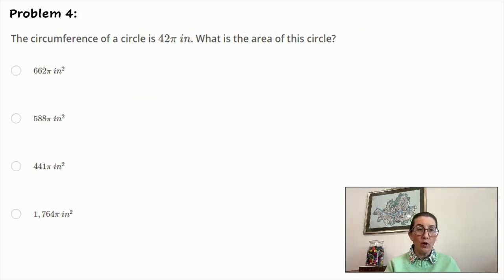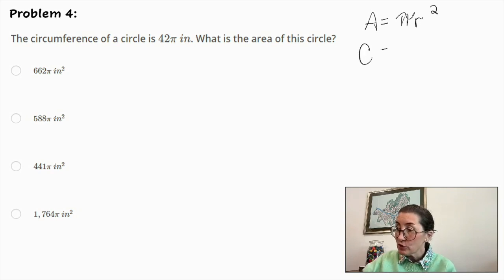Problem number four. The circumference of a circle is 42 pi inches. What is the area of this circle? So there are two formulas that we need. The first is area. So the area of a circle is pi r squared. The circumference of a circle is 2 pi r.